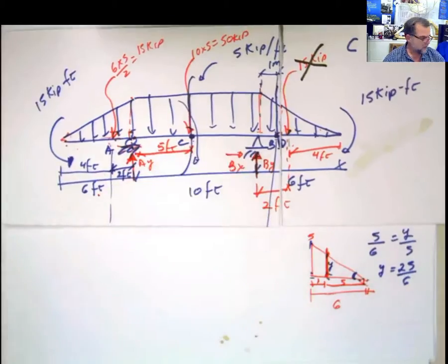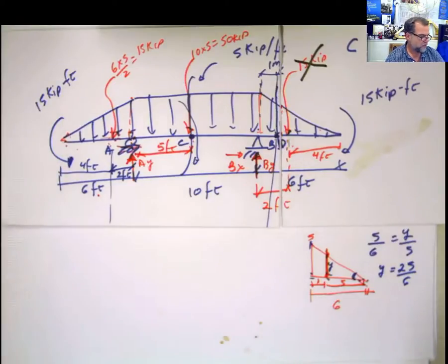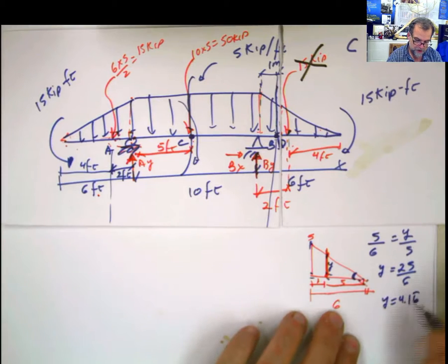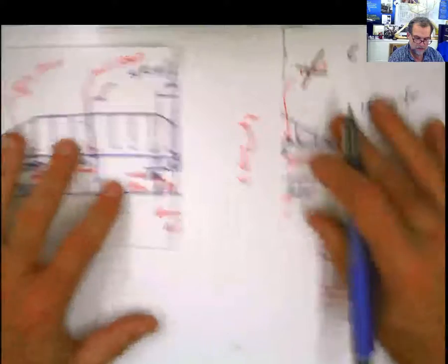So then y is going to be equal to 25 divided by 6, which is 4.16 periodic here. And that's going to be the height of this triangle.